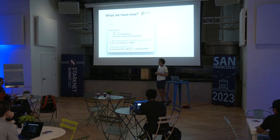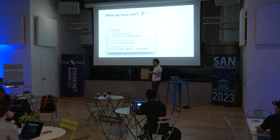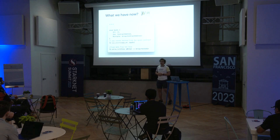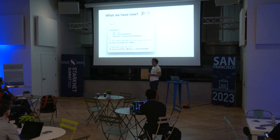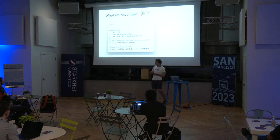Another interesting feature is mocking contract calls. You don't have to deploy every contract you want to test interactions with. Instead, you can just say: under this address and this entry point, I want this data to be returned — and Starknet Foundry handles that. And another interesting feature is L1 and L2 interactions. Right now you can simulate, for example, a call from L1 to your contract. The other way around is still work in progress.